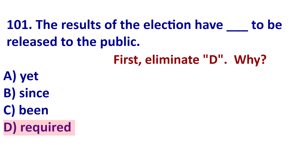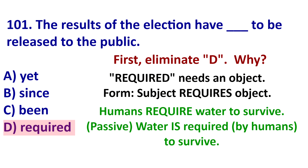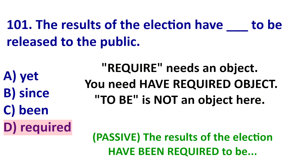First, let's eliminate D: 'required.' If you use 'require,' you need an object. That means you need subject requires object. For example, 'humans require water to survive,' or in passive: 'water is required to survive.' The law requires that someone release the election results — we need an object here, and we don't have one. So let's eliminate D.